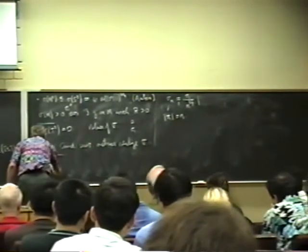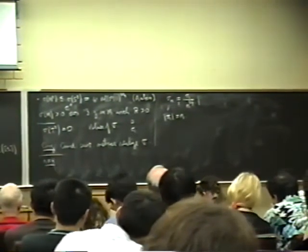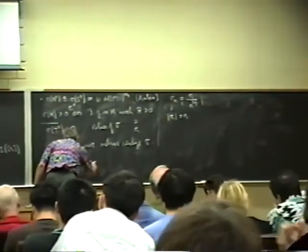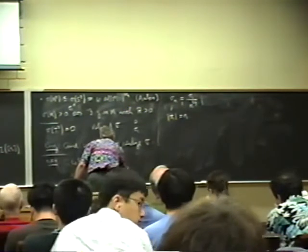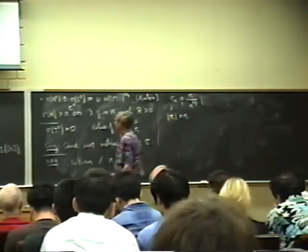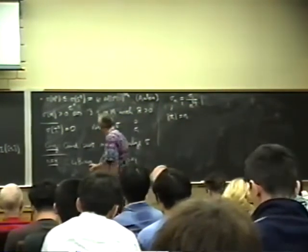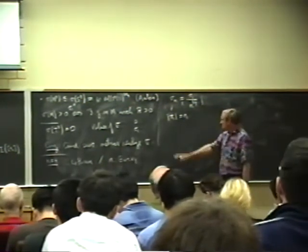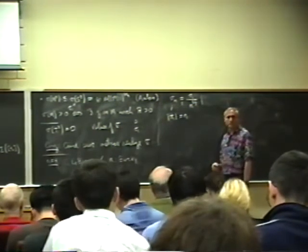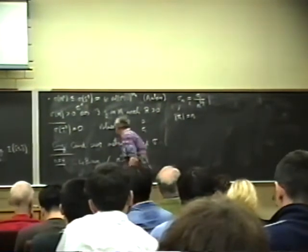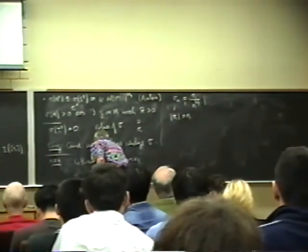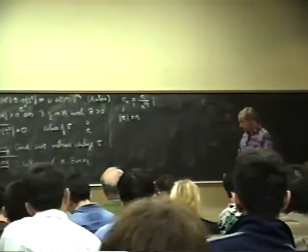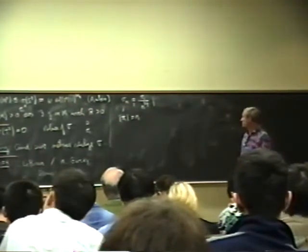In four dimensions, the initial argument uses the Seiberg-Witten equations, and there are other arguments using spinors. For example, they're able to show that the standard metric on CP2 realizes its Yamabe invariant. So in four dimensions we know the invariant is highly non-trivial—there are lots of four-manifolds with many different values. But quotients of S4, like RP4, remain unknown, and those methods are three-dimensional and would be quite hard to generalize.